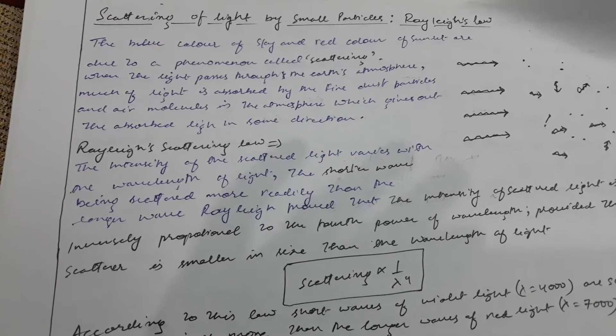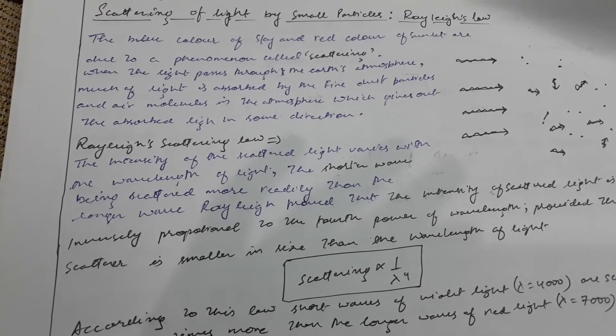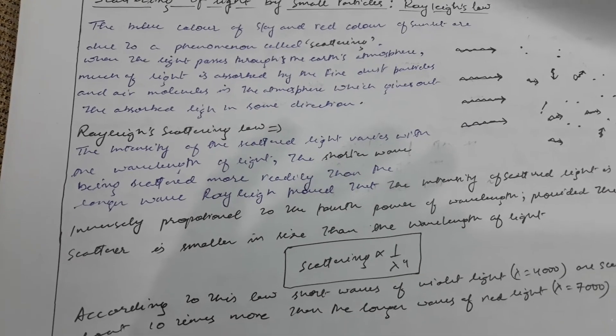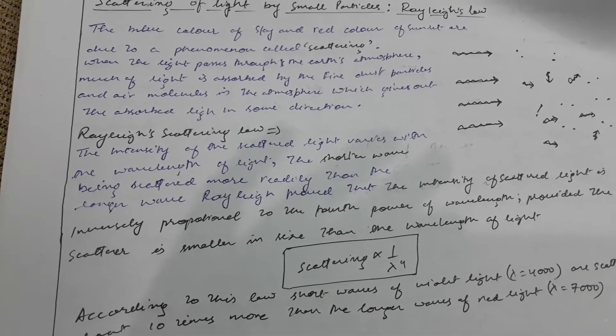When light passes through Earth's atmosphere, much of it is absorbed by fine dust particles and air molecules in the atmosphere, which gives out the absorbed light in some direction.